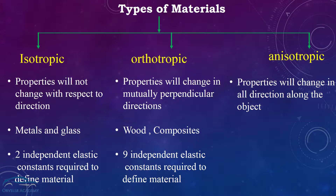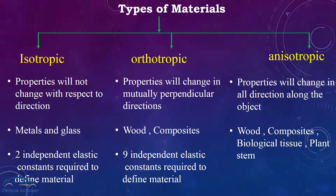Common examples of anisotropic materials are woods, composites, and biological tissues. Another popular example is sheet metal formed by squeezing a thick section of metal between heavy rollers. Because of this squeezing action, the grain structure gets flattened and stretched. As a result, the material becomes anisotropic because its properties differ in the direction in which it was rolled versus the other two transverse directions where it was not rolled.